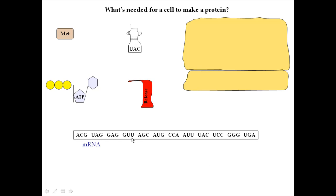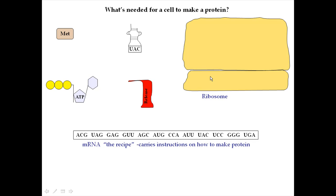The messenger RNA was made during transcription, and it's kind of like the recipe for making cookies — except it's the recipe that tells a cell how to make a particular type of protein. You need instructions, you need the recipe, in order to make a protein. Just like in baking you need a kitchen — the actual place to do the work — when proteins are being made, you need the actual physical place to make it, and that physical place is the ribosome. The ribosome is like the kitchen: it's the place where proteins are actually made.